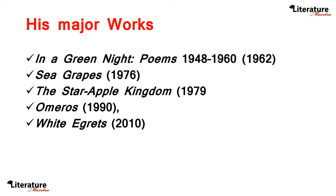His major works are In a Green Light, which is a volume of poems; Sea Grapes; The Star Apple Kingdom; his Homeric poem Omeros; and White Egrets.